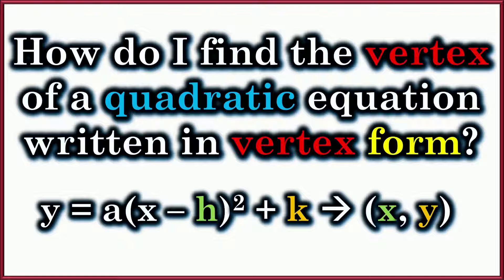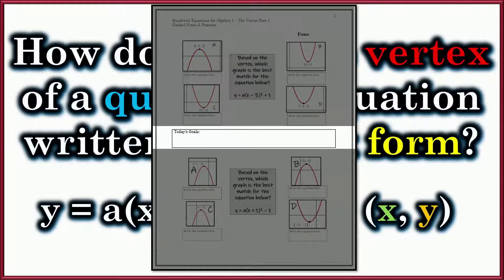What we're going to show you in this video is how to find the vertex of a quadratic equation written in vertex form. Vertex form is y equals A times x minus h squared plus k. I'm going to show you how to find that vertex coordinate x comma y just from looking at the equation. If you're doing the guided notes, that's what you'll write as your goal.